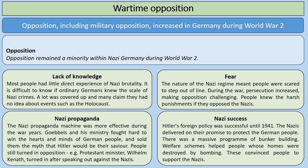Opposition still remained a minority within Nazi Germany during World War II. Although there were some heroic examples of opposition, it was still very difficult to oppose the Nazis. One reason might be a lack of knowledge — most people had little direct experience of Nazi brutality, so it's difficult to know if ordinary Germans knew the scale of Nazi crimes. They almost certainly knew something was going on, but it wasn't openly talked about or written about in newspapers, and a lot was covered up. Many claimed they had no idea about events such as the Holocaust, and as it wasn't being openly spoken about, some people could claim a lack of knowledge and therefore not resist.